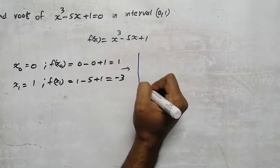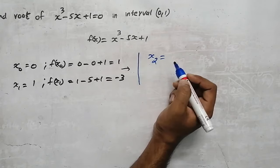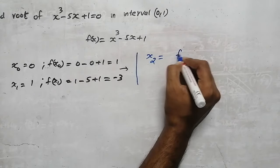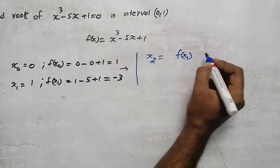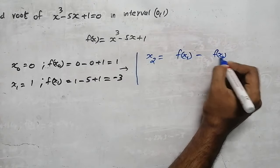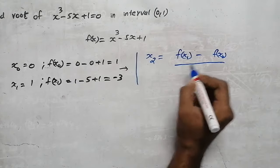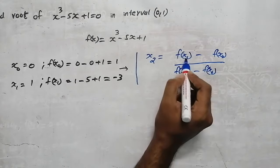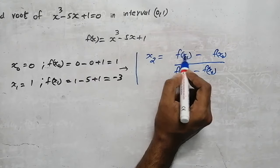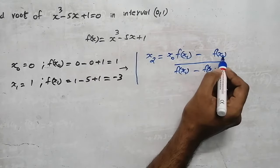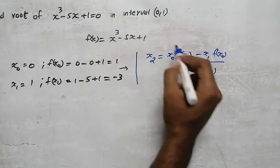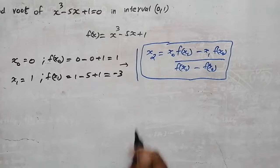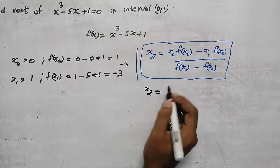Now we need to find x₂. For that, there is a formula. In the numerator write f(x₁) minus f(x₀); in the denominator also write f(x₁) minus f(x₀). Here, multiply the numerator term by x₀ and the denominator term by x₁ respectively. This is the formula for finding x₂.